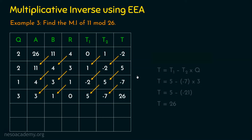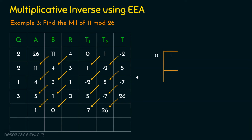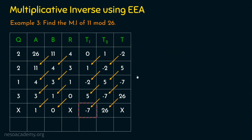Running the algorithm once more, we get A equal to 1 and B equal to 0, with T1 equal to minus 7 and T2 equal to 26. When we attempt the A mod B operation, we encounter a divide-by-zero situation — it cannot be proceeded further. So we stop the algorithm at this point.